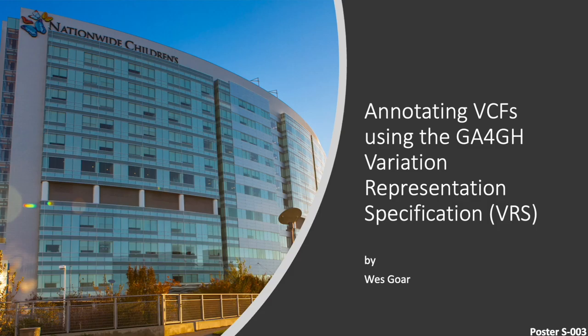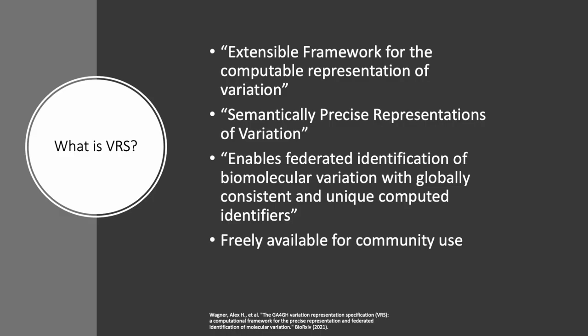What is VRS, and why should you care about it? VRS is an extensible framework for the computable representation of variation. VRS provides semantically precise representation of variation, and it enables the federated identification of biomolecular variation with globally consistent and unique computed identifiers. By applying VRS to sequencing annotation, genomic knowledge bases, and electronic health records, we ensure the precise and reliable exchange of information regarding variation. VRS is an open-source package, freely available for community use — see the VRS paper or follow us on GitHub to learn more.